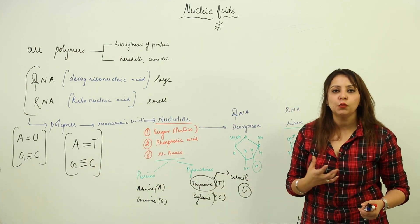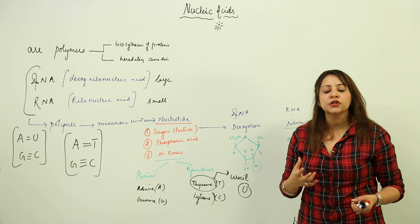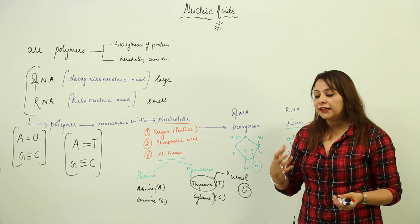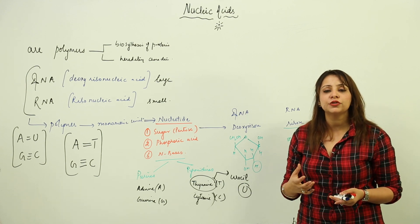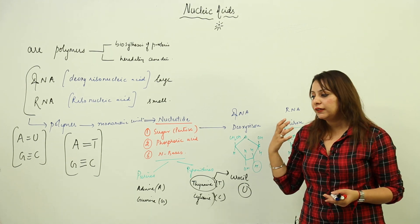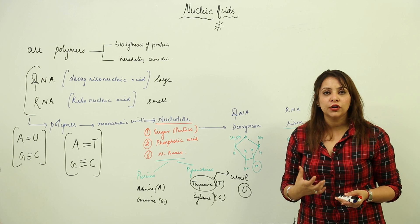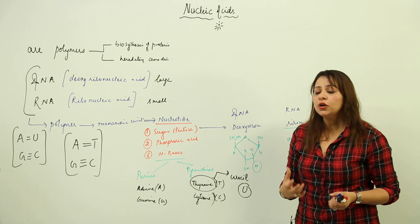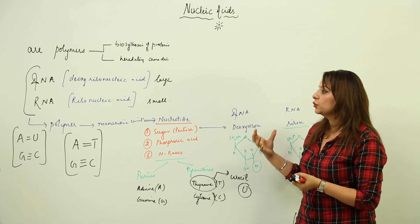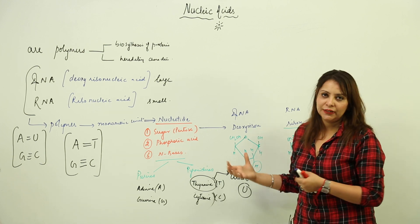Now we will start with the DNA model — the famous double helix model for which Watson and Crick were awarded the Nobel Prize. So we are going to start with that model.